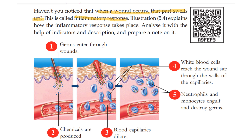This defense mechanism is called the inflammatory response. When there is a wound, chemicals are produced. Blood capillaries dilate. White blood cells reach the wound sites through the walls of the capillaries. Neutrophils and monocytes engulf and destroy the germs.